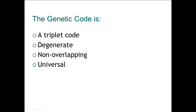In summary, the genetic code has four key properties. It is a triplet code — nucleotides are read in threes. It is a degenerate code — one or more triplets can code for the same amino acid. It is non-overlapping — each nucleotide base belongs to a specific triplet and is read as such. And it is universal — the genetic code for a specific protein found in humans is also found in other primates or other organisms.